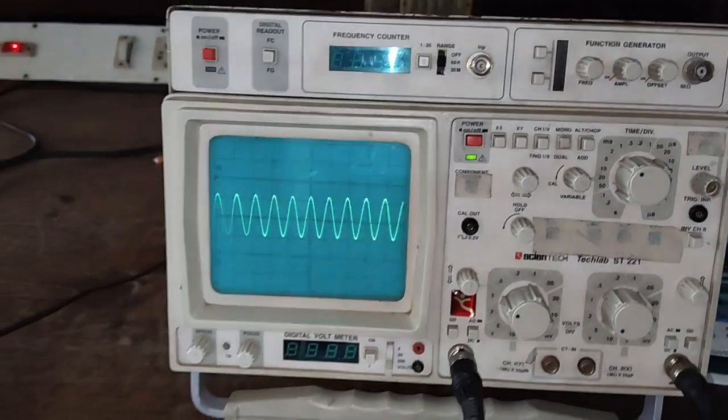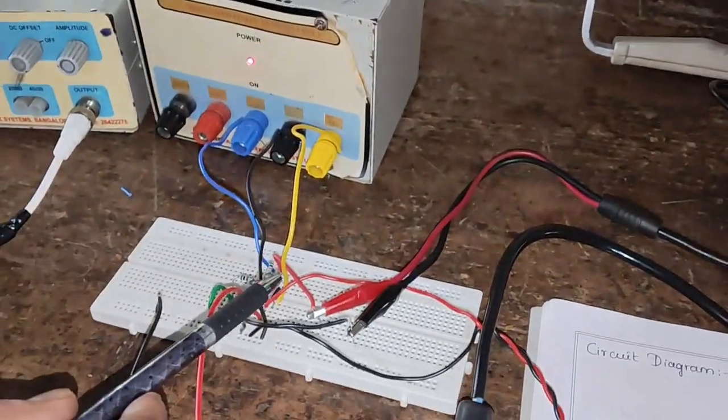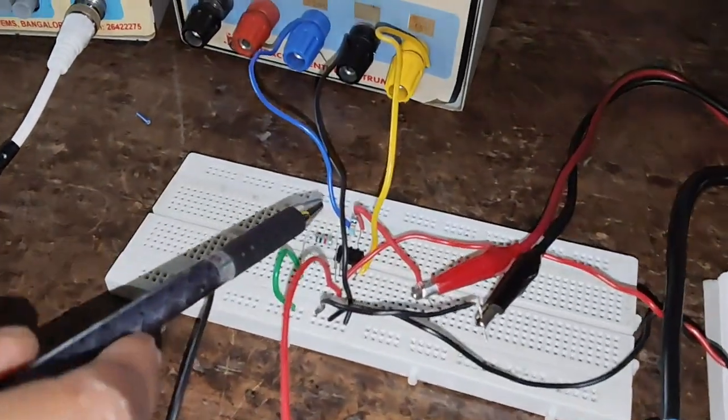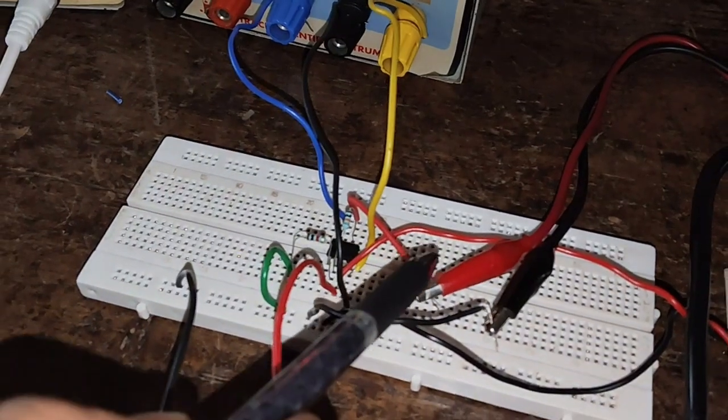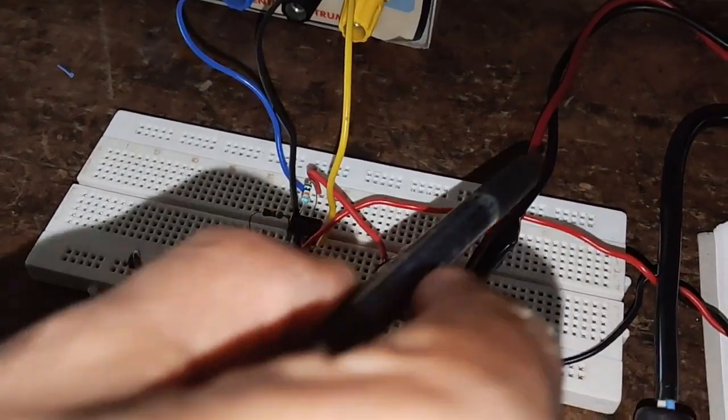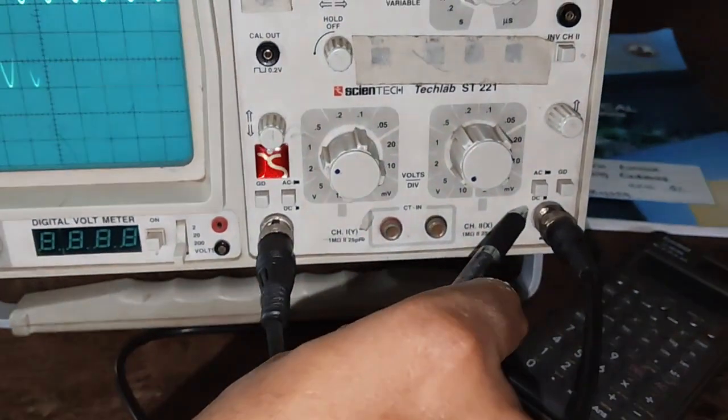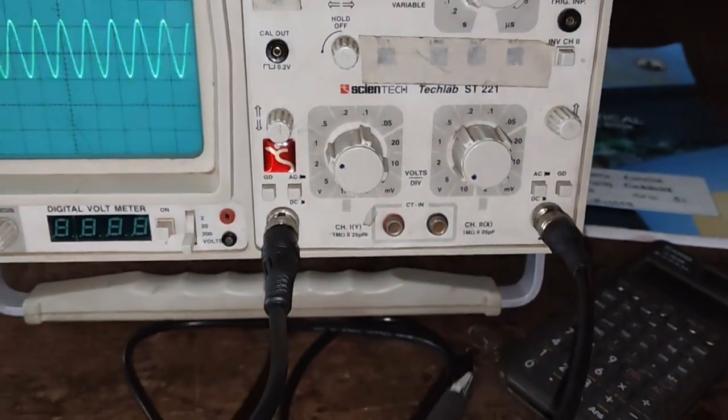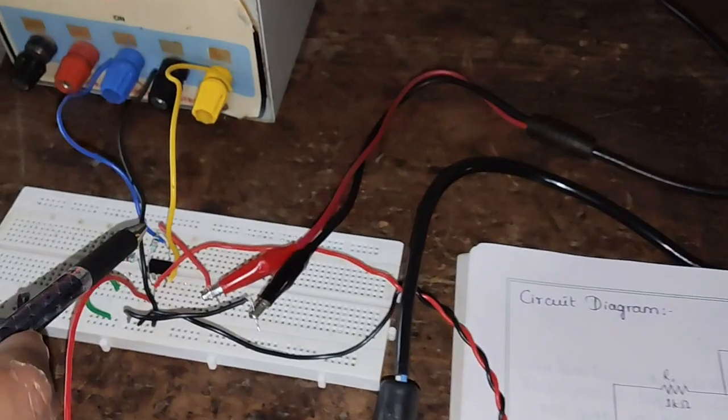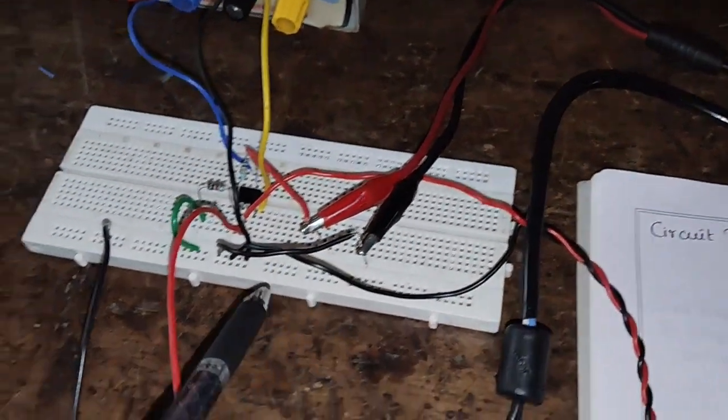Now we will also observe the output. Output is taken at pin number 6. Here we can see that another channel of CRO is connected to channel 2 - positive is connected to pin number 6 and negative to ground.